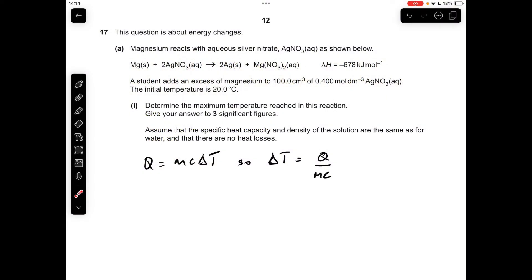So let's make a start. It's a calorimetry question. We've got to calculate the maximum temperature reached by the reaction, so we're going to need to calculate ΔT from Q over MC. Once we know that, we can add that on to the starting temperature and that will give us the maximum temperature reached.